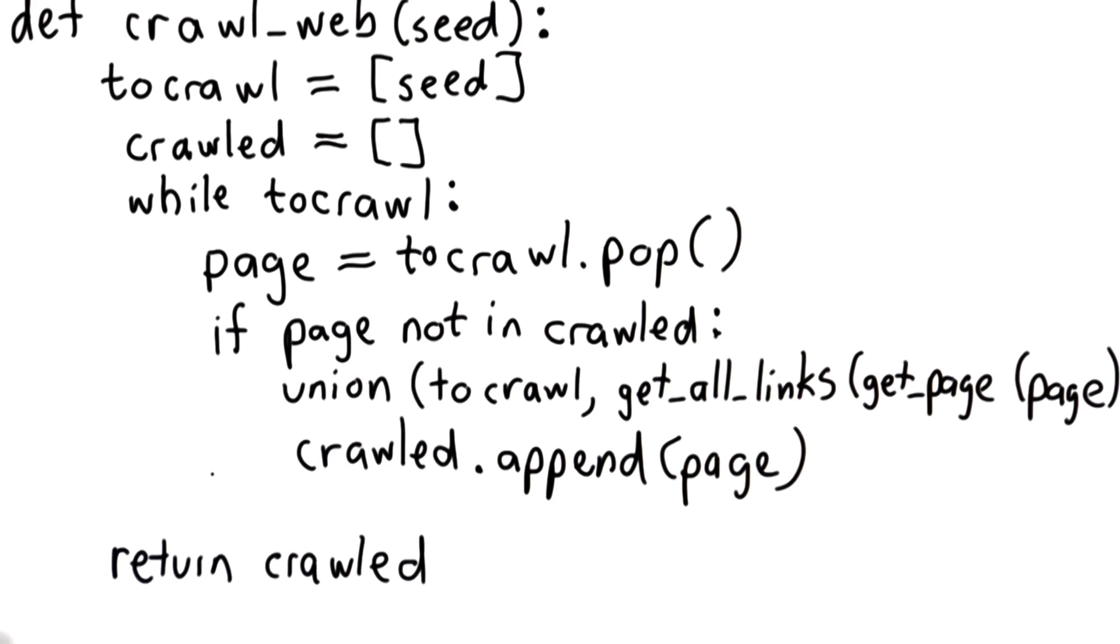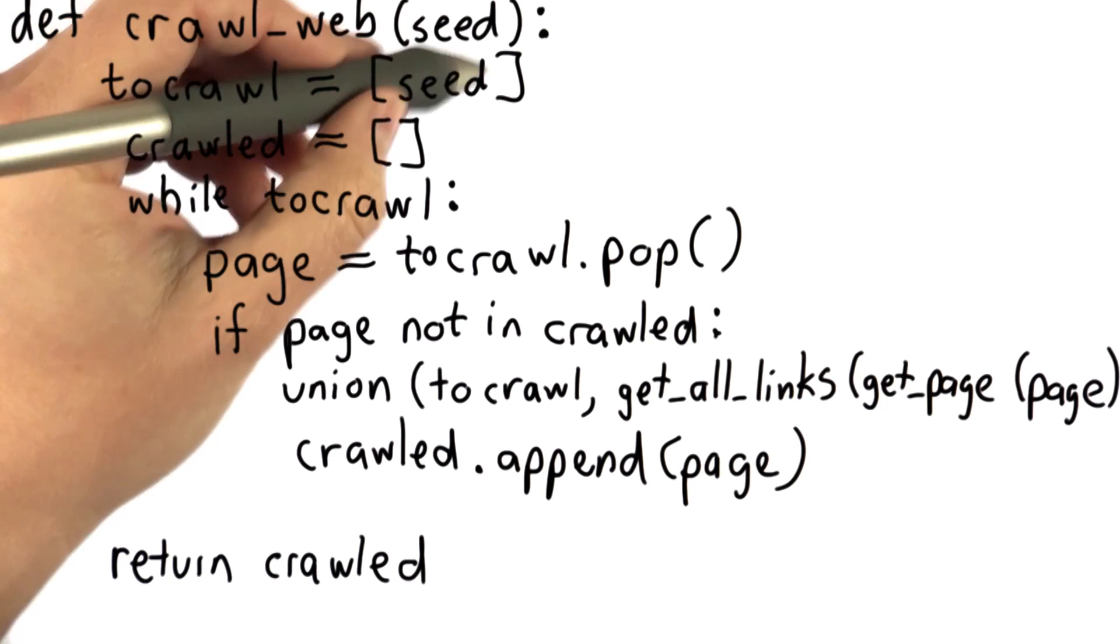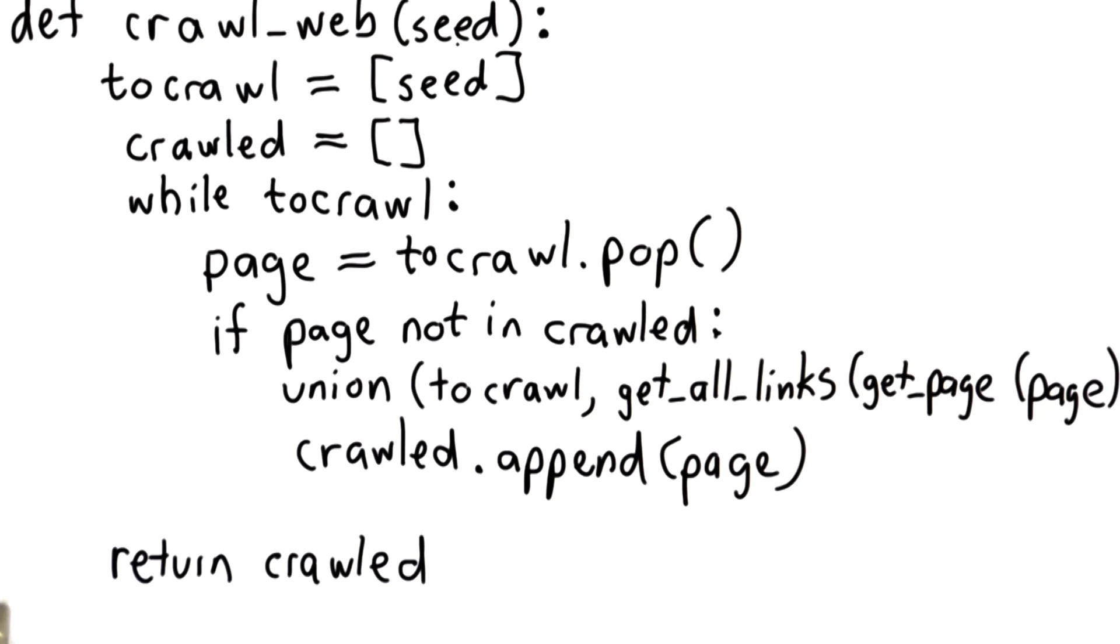And now we're done. We've got a working web crawler for any seed page. It will find all the pages that can be reached from that page and return them in a list.